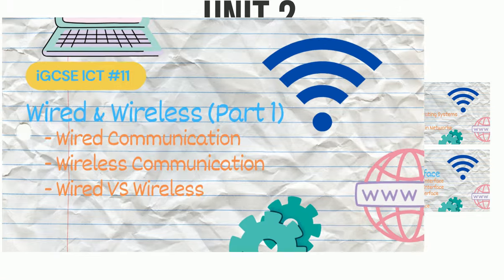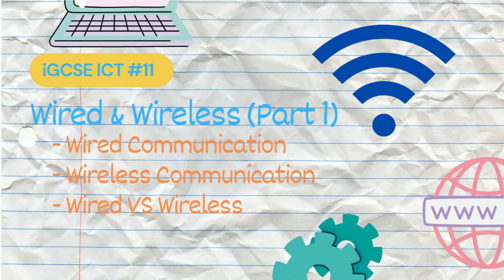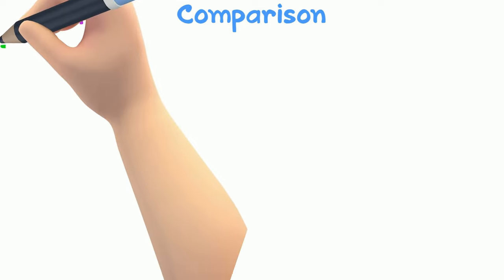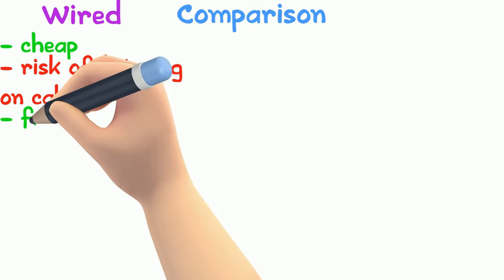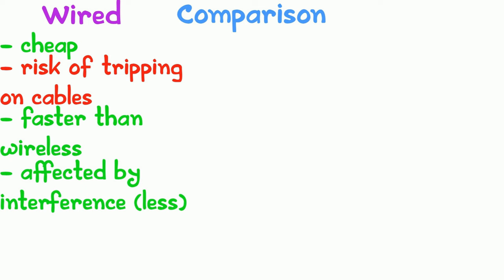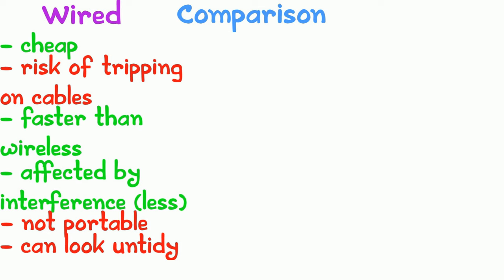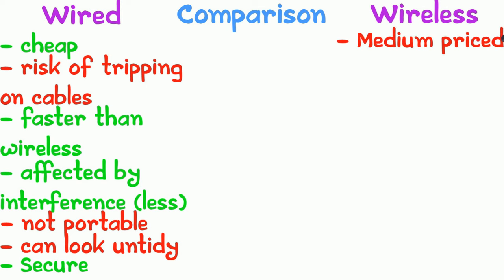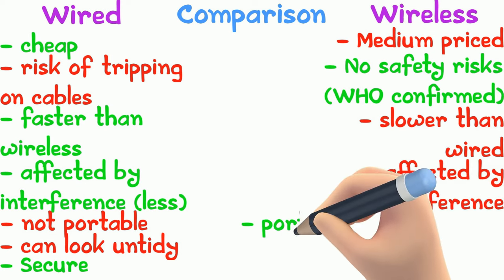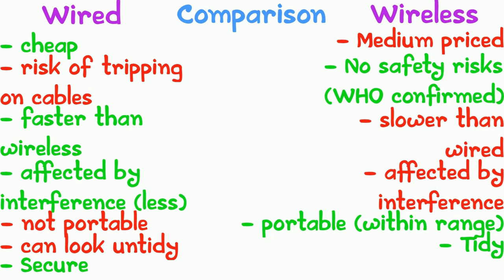Comparing wired and wireless connections: Wired — uses cables so it is relatively cheap, faster than wireless, less affected by interference, not portable past 100 meters, can look untidy, but is secure. Wireless — no need to buy cables, medium router cost, no cable safety risks, slower than wired, affected by interference, portable within a certain range, tidy, but easier to intercept.